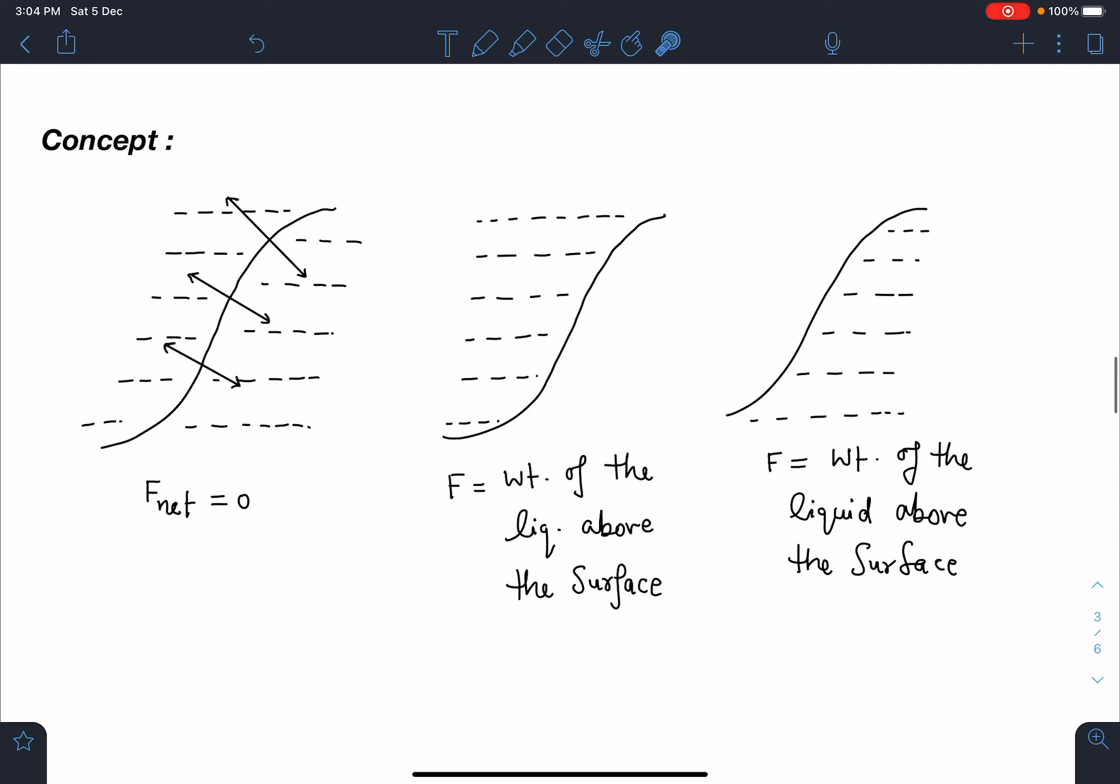Concept wise, I can say if there is a surface, a very thin surface present within the liquid when liquid is present both side of it, then we know that pressure at all these points is going to be same.